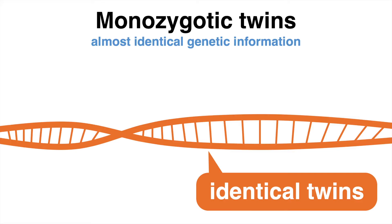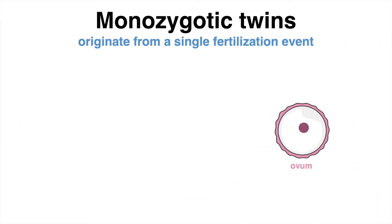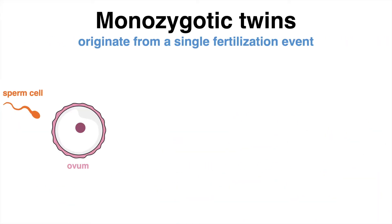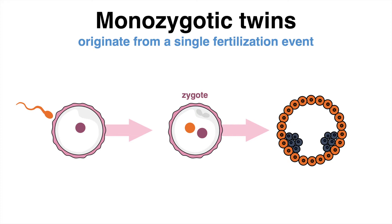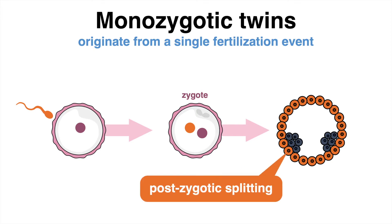They result from the fertilization of a single egg by a single sperm cell. Both twins originate from the same fertilized egg — in other words, from the same zygote. After some rounds of cell divisions, the early embryo splits into two. This is referred to as post-zygotic splitting.